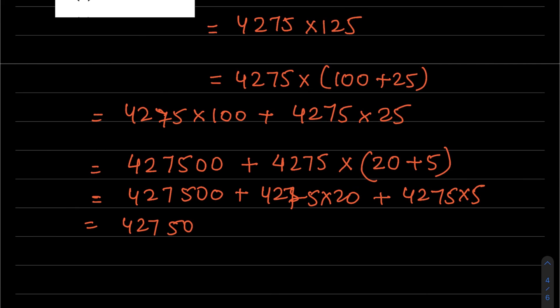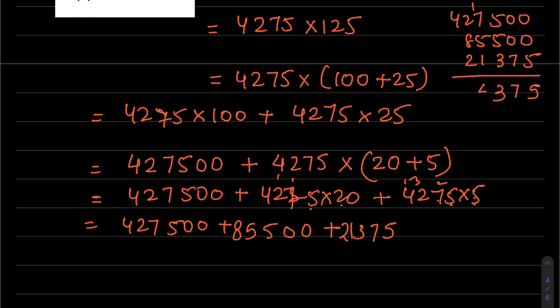So this is 427,500 plus 4275 into 20 plus 4275 into 5. 4275 into 5: 2 fives are 10, that's 1 and 4, 15, 22, 37, 21,375. 4275 into 20: 5 fives are 25, 5 sevens are 35, 36, 37, 5 twos are 10, 13, 5 fours are 20, 21, gives 85,500. Now we add all the numbers: 427,500, 85,500, and 21,375.